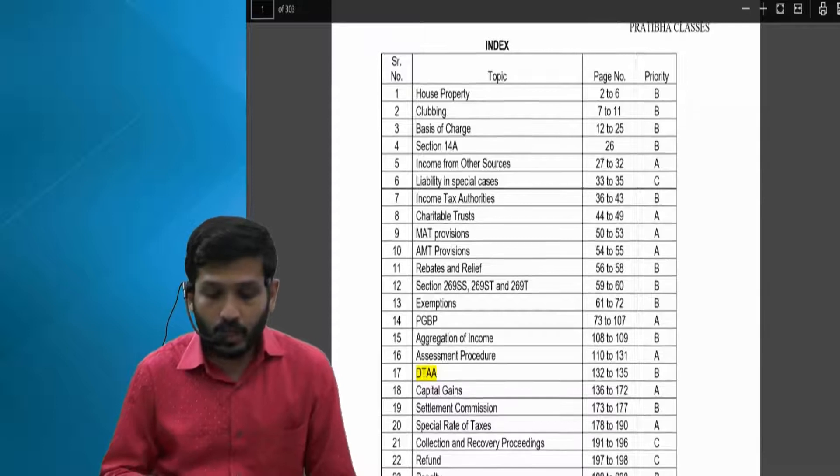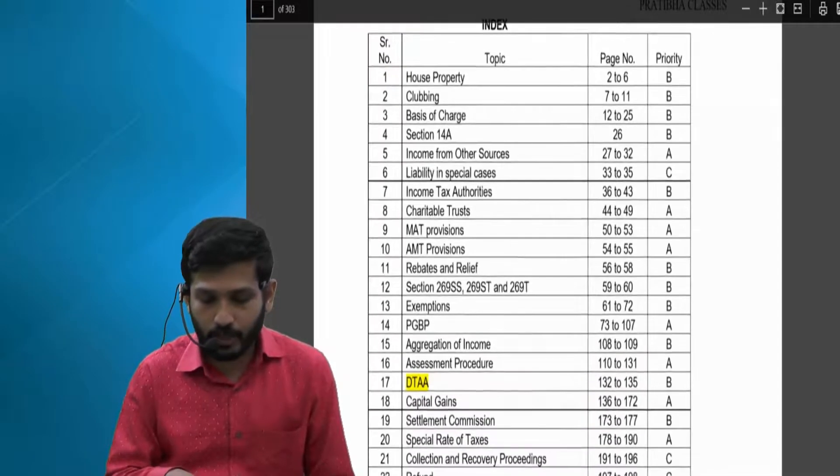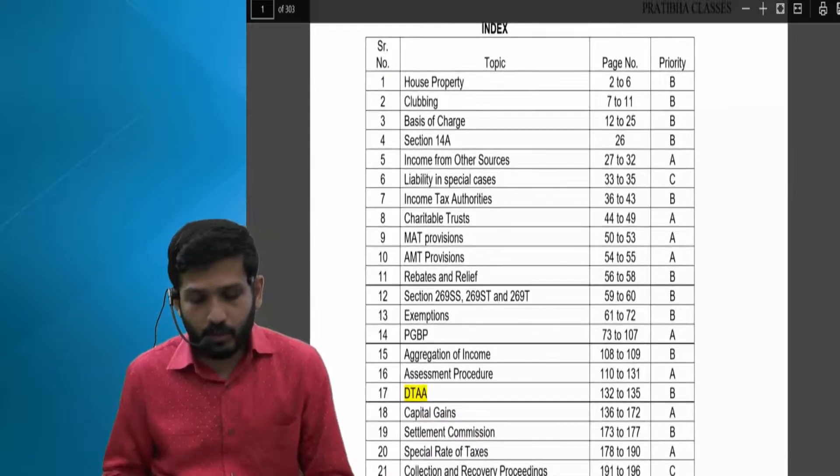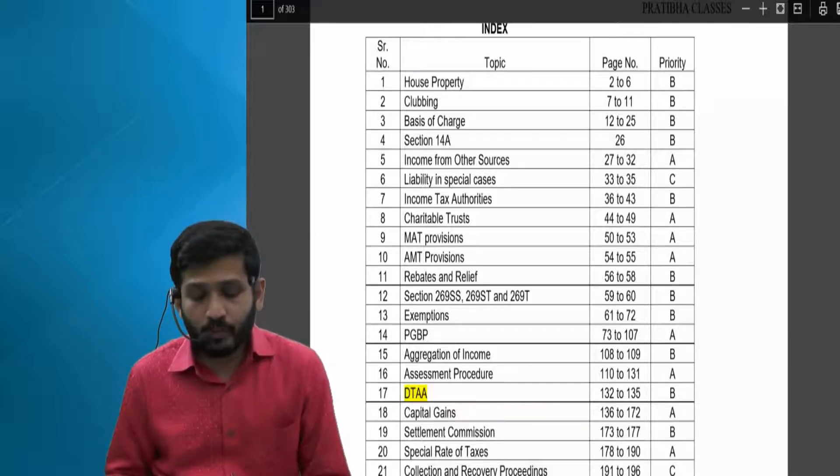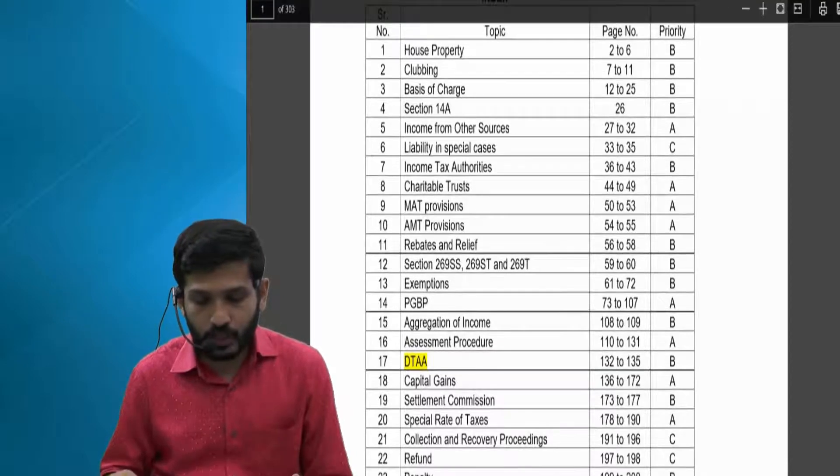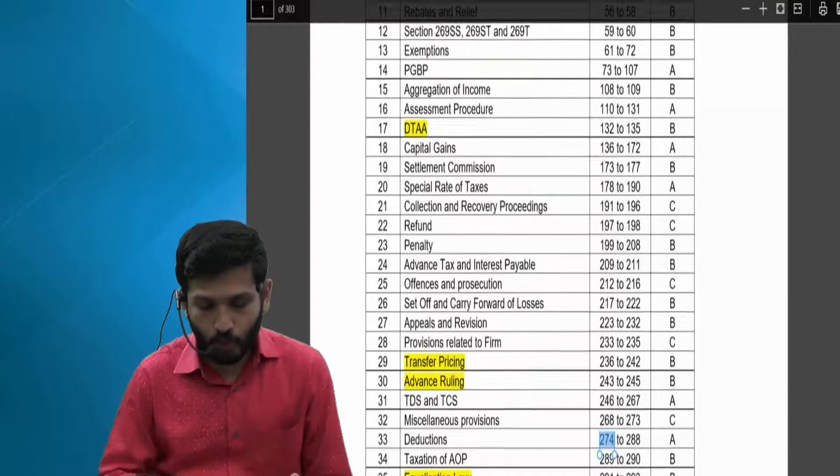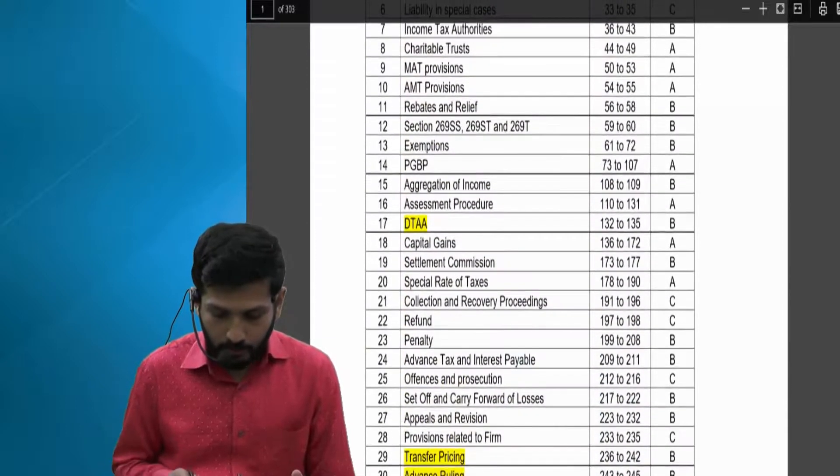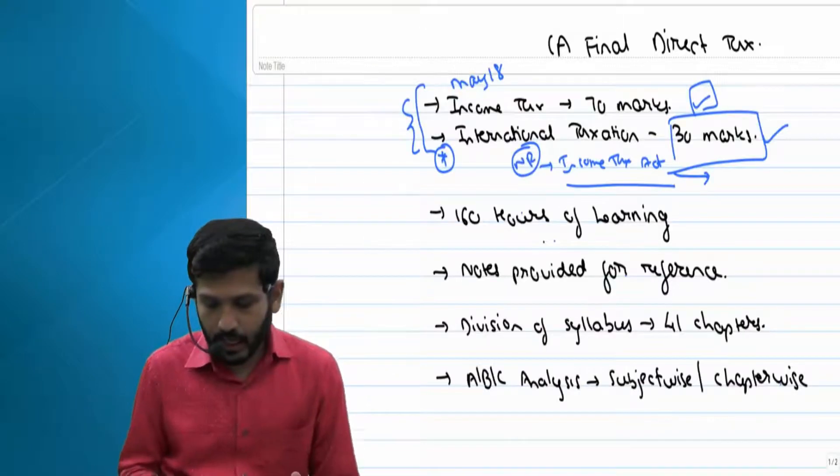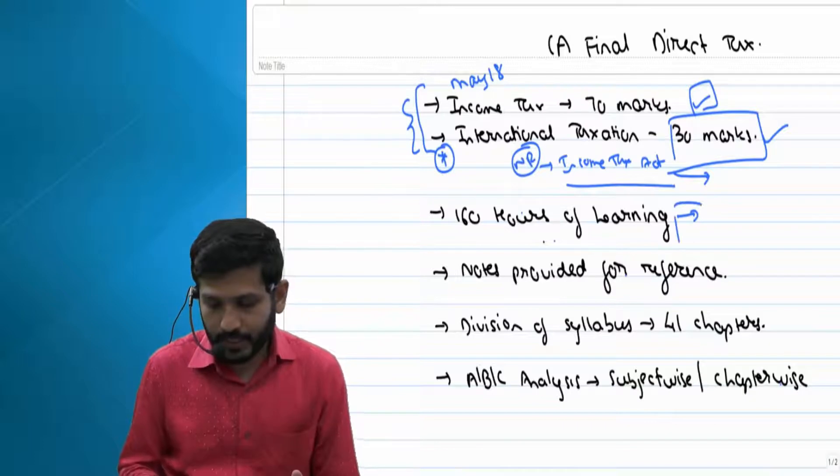So let us quickly revise which all chapters we have to study. We will start with house property which is a very basic one, then clubbing, basis of charge, and in this way this list will go on. Now this entire syllabus what we have to complete, I have tried to cover it into 160 hours of learning.